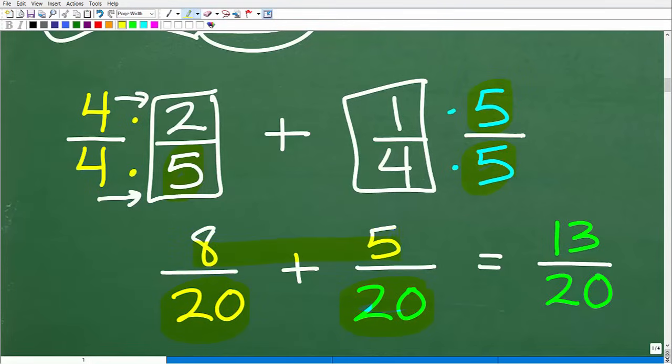Now, finally, we can add the respective numerators. And of course, if this was a subtraction problem, we would do that. So eight plus five is 13. And we put that over the denominator 20. So this is how we get our answer.